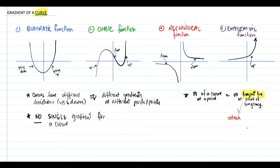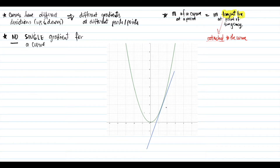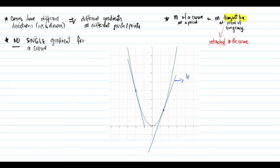What does being tangent mean? It means that a line is attached to the curve at a point. Here is how you can attach a tangent line to a curve at a specific point — just make sure that the point of tangency is the desired point.